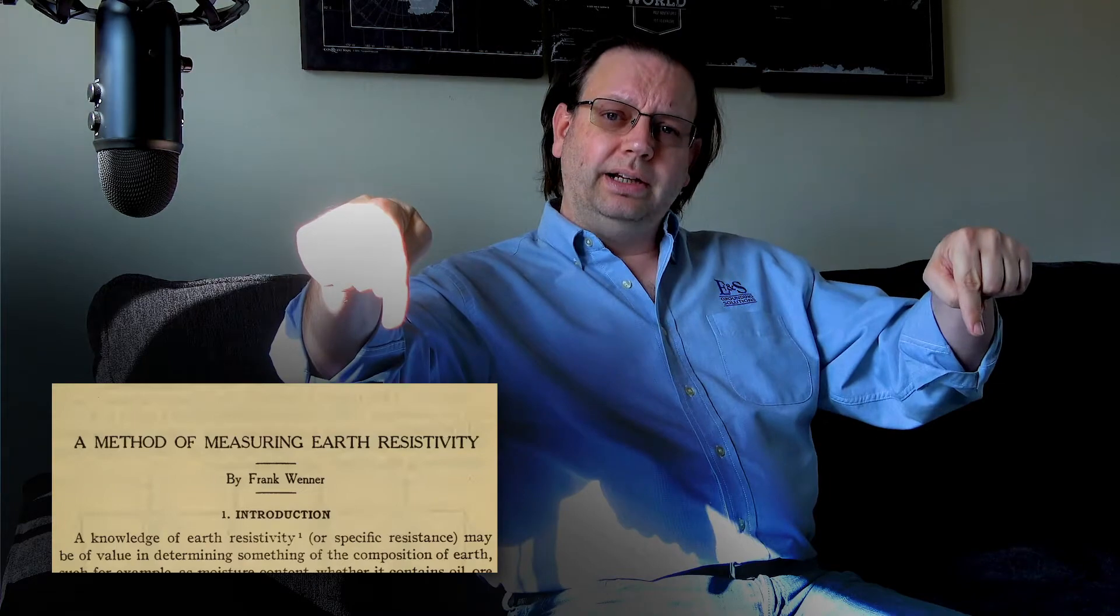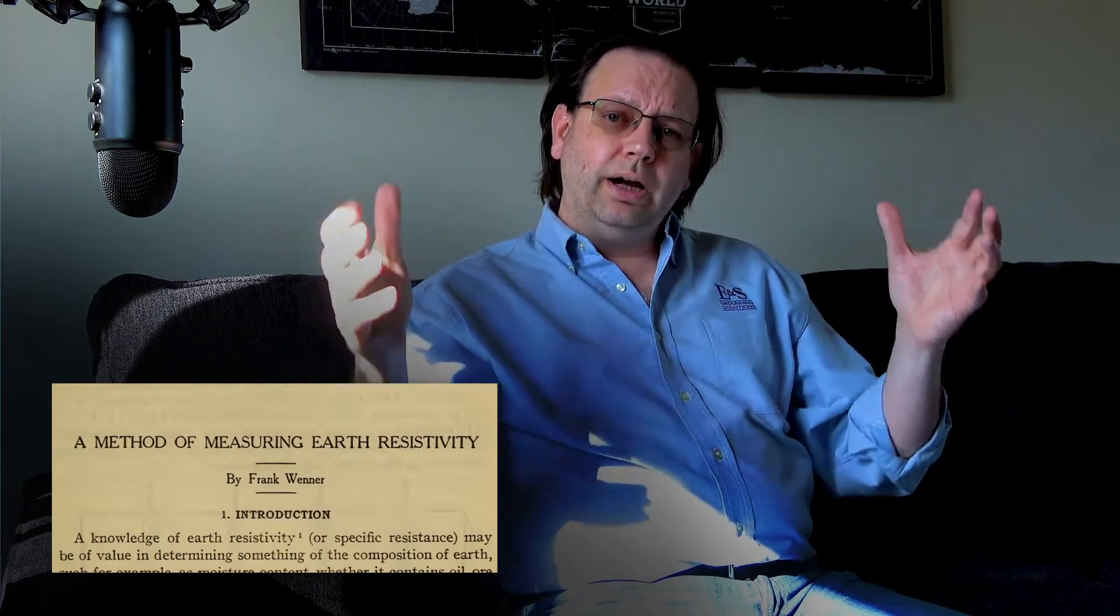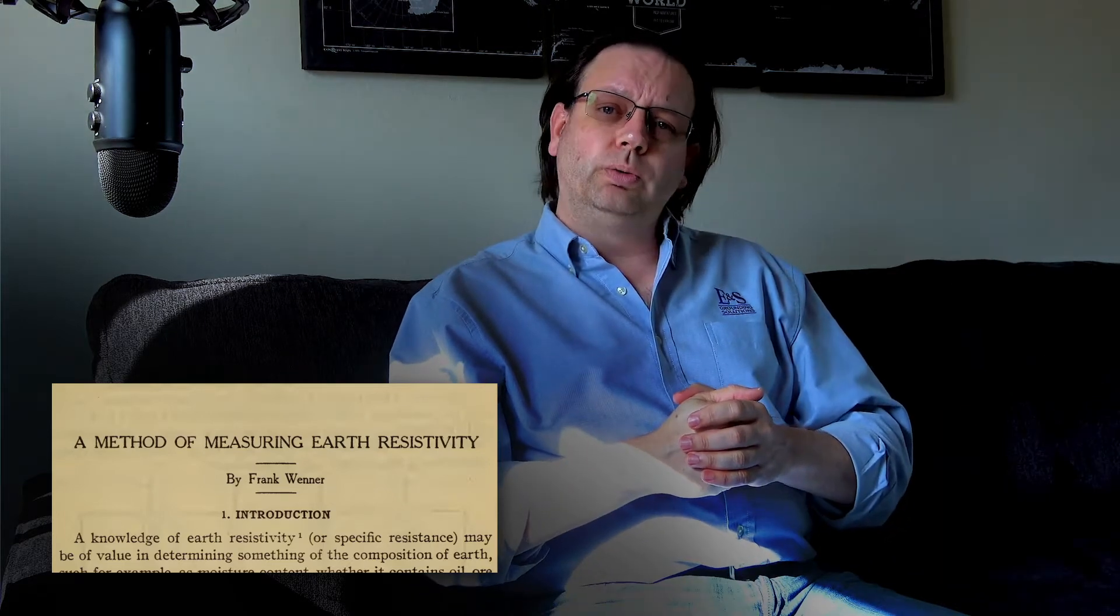This guy Wenner back in, I want to say it was 1906, 1901, oh forgive me guys, way back at the early turn of the century, he wrote a paper where he discovered that if he placed the current probes on the outside and the voltage probes on the inside, he could measure down into the earth and get an average soil resistivity. And what he found out was he wanted equal spacing. So if he placed the probes at five foot spacing, he could actually measure down into the earth five feet into the earth.